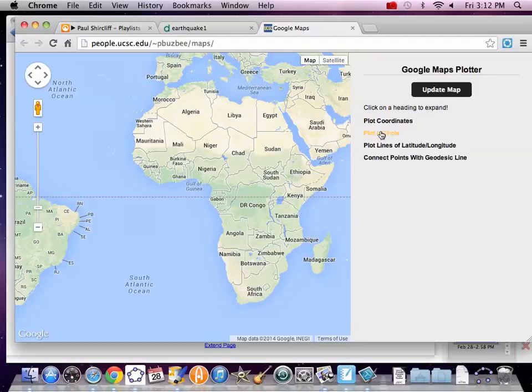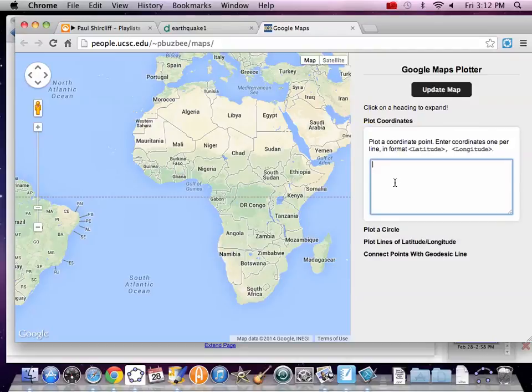And over here it says, hey, plot coordinates and plot a circle. So I'm going to do both. Plot coordinate and plot circle. The coordinate is going to give us the center of the circle. Now, it looks like they want you to do angle brackets around latitude and longitude, but they actually don't.